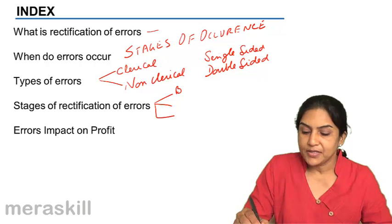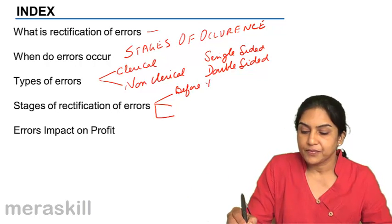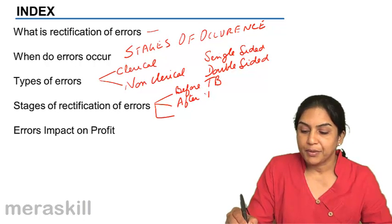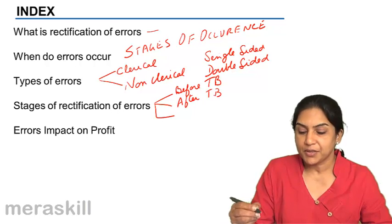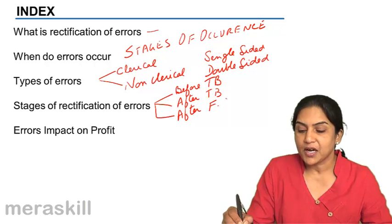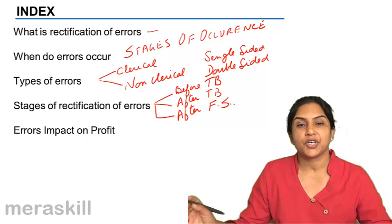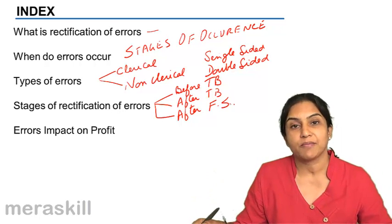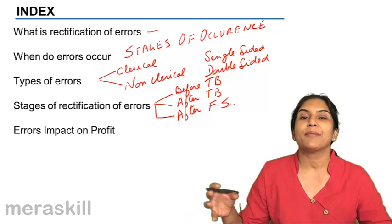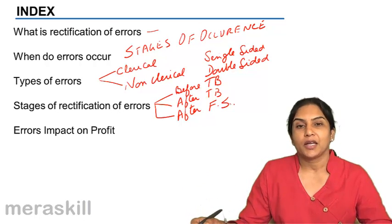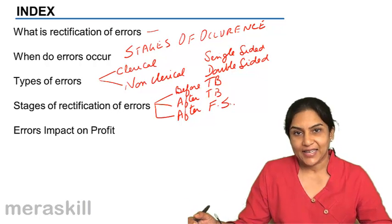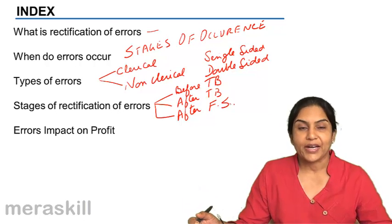Before trial balance, after trial balance but before financial statements are prepared, or after even financial statements are prepared. After profit and loss and balance sheet is prepared, maybe in the next year we find out the errors. So, some entries would be different depending on when these errors are detected and when we choose to rectify them.